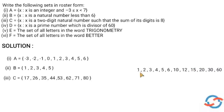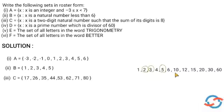Now we check which are prime. 1 is not prime. 2 is prime. 3 is also prime. 4 is composite. 5 is prime. 6, 10, 12, 15, 20, 30, 60 are all composite. So the prime divisors are 2, 3, and 5.